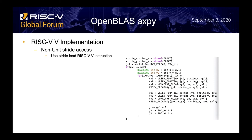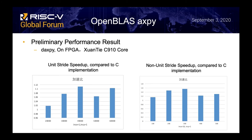The non-unit-stride code is very similar to the unit-stride case — we just change the load and store instructions. For the performance test, we tested OpenBLAS DDAXPY on the XuanTie C910 core on an FPGA card. We tested unit-stride and non-unit-stride speedup compared to the C implementation, achieving about 10% to maybe 50% speedup.